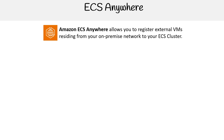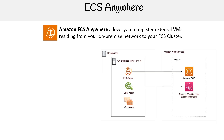Amazon ECS Anywhere allows you to register external VMs residing from your on-premise network to your ECS cluster. Here's a diagram — the idea is that you have on-prem virtual machines or servers, and they are utilizing ECS.